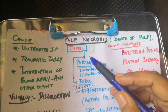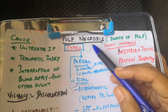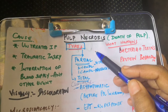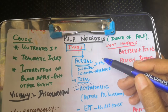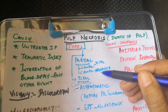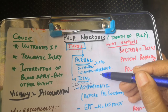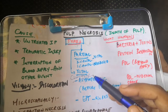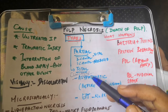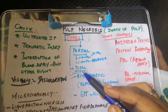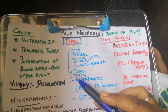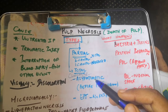Regarding types, in a multi-canal tooth, if one canal remains vital while a few canals are necrotic, it is called partial necrosis. If all the canals are necrotic, it is called total necrosis.